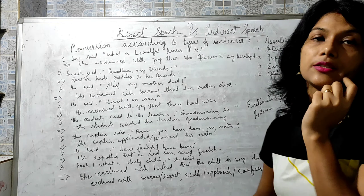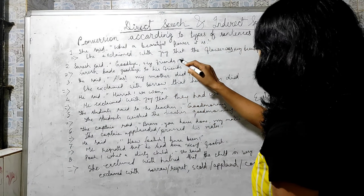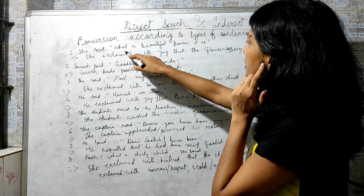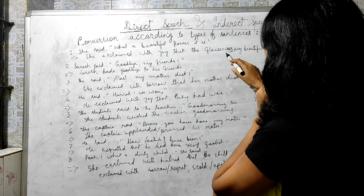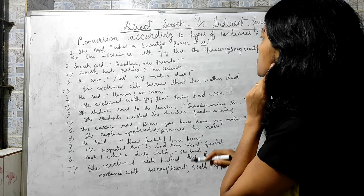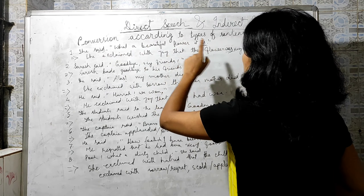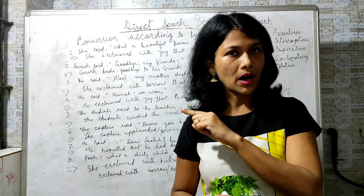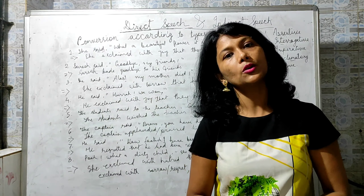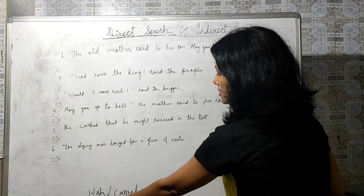A correction: earlier I wrote 'the flower is very beautiful' but it should be 'the flower was very beautiful' because in indirect speech 'is' turns to 'was.' Now let's move to optative sentences — the last type. In optative sentences we use wish, curse, or blessing in place of 'say.'